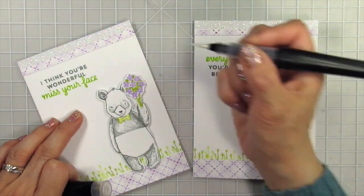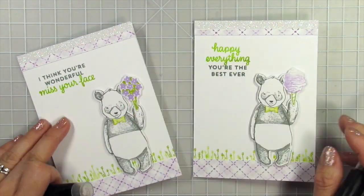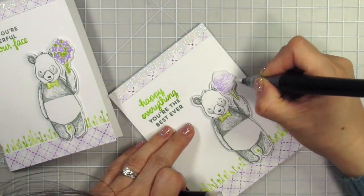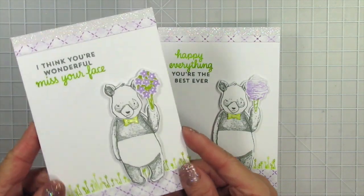Then I use the sparkle pen to add shimmer to the centers of the flowers and the cotton candy. This helps draw the eye from that top glitter strip down to the gifts and to the bow ties. Now my cards are done.